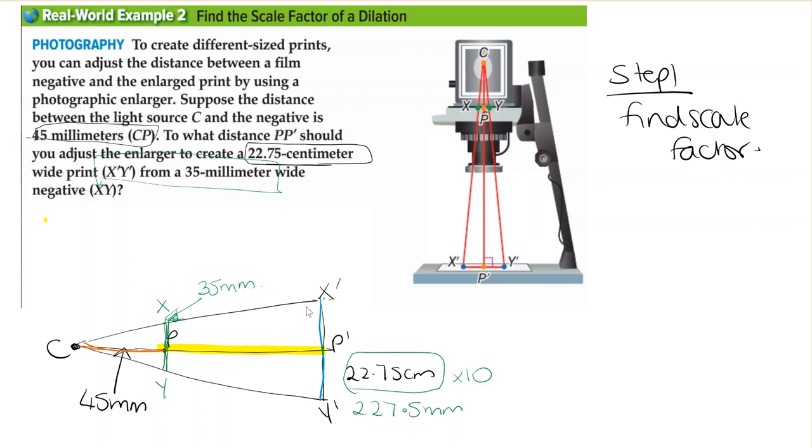To do that, we take X'Y' and divide by XY. So this will be 227.5 divided by 35. This gives us K, which is our scale factor.